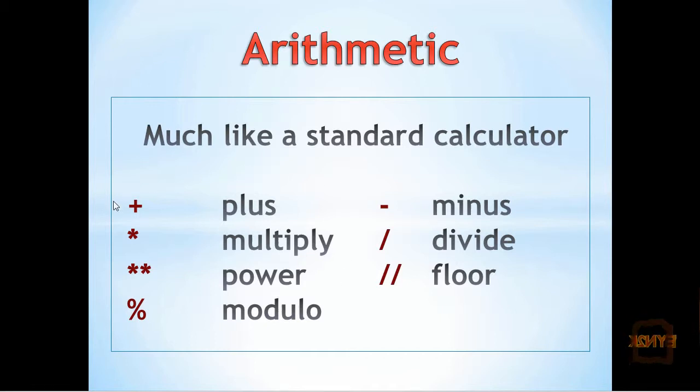The plus is signified by a plus, minus by a minus, multiply by a star, divide by a forward slash and power by two stars. If you want to do the square root, simply do one divided by the number you want to do the square root of. The floor operator is signified by two forward slashes and modulo by percentage. The floor gives you the amount of times one number divides into another and the modulo gives you the remainder.